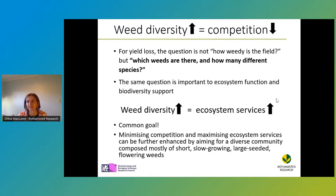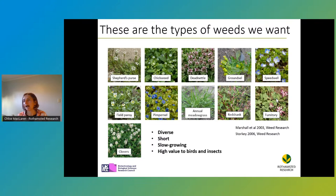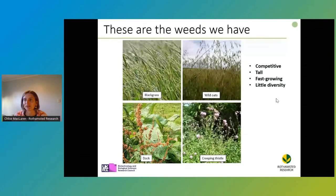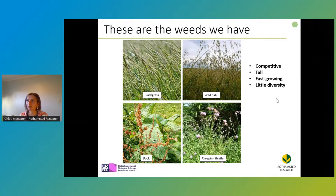Here are some examples of the types of weeds that we might want. They're all low growing, most of them are flowering, and they tend to be slow growing. A lot of these flower later in the season and produce seeds later in the season. They have high value to birds and insects. Unfortunately, what we usually see when we walk out into a farm is not a nice diversity of all those small friendly slow-growing weeds, but rather a lot of black grass and wild oats. If you walk out into pasture, it's often a lot of dock and creeping thistle. What these weeds have in common is that they're all very tall, very fast growing, and very competitive with the crops — but also very competitive with other weeds. If you have a lot of black grass, you're unlikely to have a lot of those other small more diverse weeds that might be more beneficial, because black grass is competing with them as well as the crop.